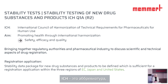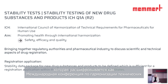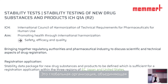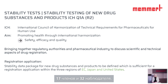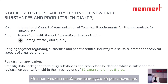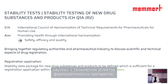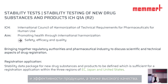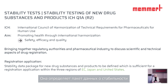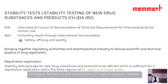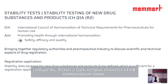ICH stands for International Council of Harmonization of Technical Requirements for Pharmaceuticals for Human Use. It is a global initiative with about 17 members and 32 observers. It brings together regulatory authorities and the pharmaceutical industry to discuss scientific and technical aspects, develop ICH guidelines, and achieve greater harmonization worldwide to ensure products are safe, effective, and of high quality. It also determines the stability data package for new drug substances and drug products sufficient for registration in the European Community, Japan, and the United States, referring to climate zones 1 and 2.